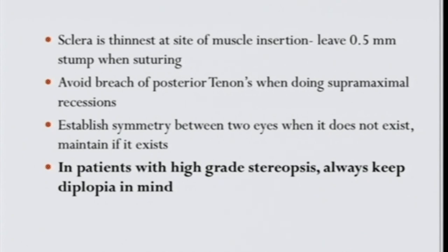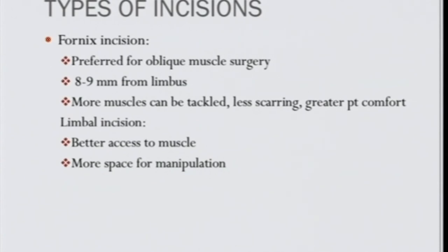Avoid breach of the posterior Tenon's when doing supramaximal recessions. Establish symmetry between the two eyes. In patients with high-grade stereopsis, always keep diplopia in mind — over-correcting intermittent exotropia can cause intractable diplopia. If a high AC/A ratio was missed and a bilateral lateral rectus recession was planned, you may end up with 15–20 prisms of esotropia. I prefer slight under-correction and aim for orthotopia rather than over-correction.